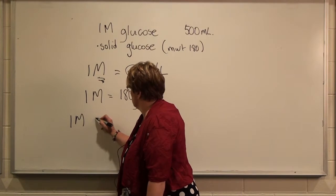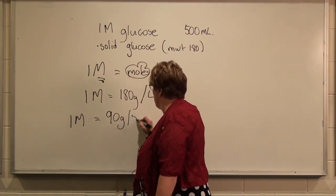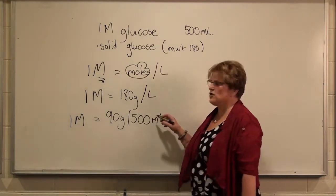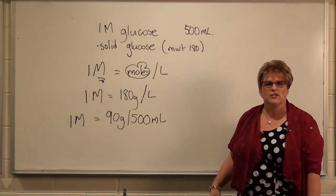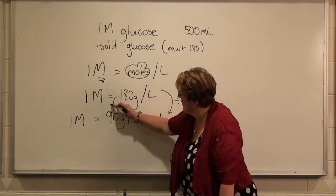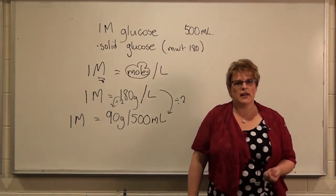one molar solution would be 90 grams per 500 mils, which, of course, is half a litre. So what we've simply done here is divide by 2 and divide by 2 here.